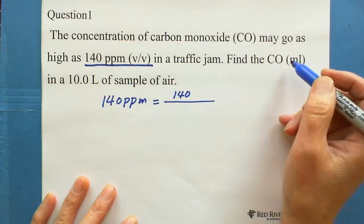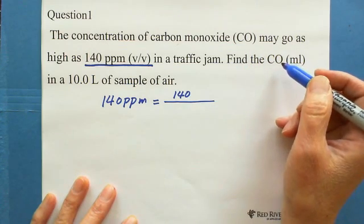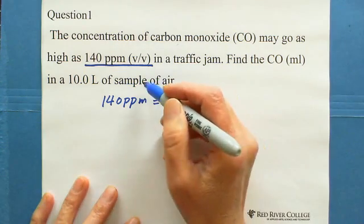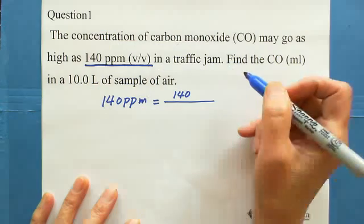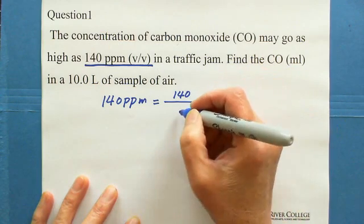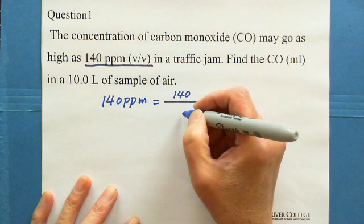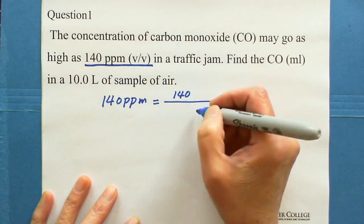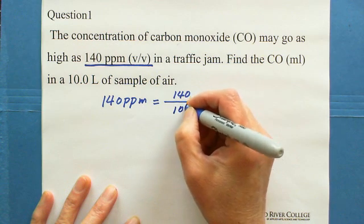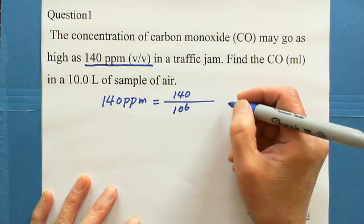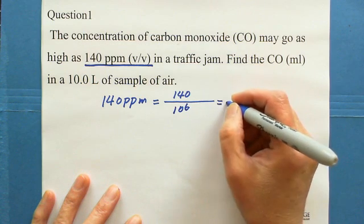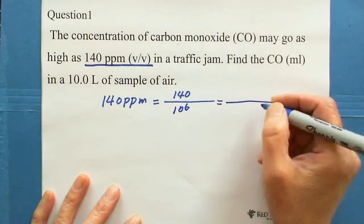In this question, we have carbon monoxide in milliliters and the unit of air is liter. So if we use 140 milliliters on top, the bottom uses 10 to the 6 milliliters, because per million is 10 to the 6. These two units have to be the same.